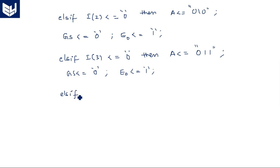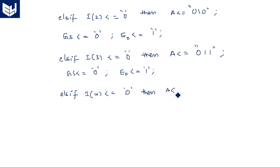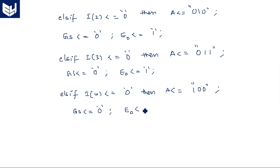Elsif I(4) = '0' — remember, single digits must be kept in single quotation marks, and multiple bits must be kept in double quotation marks — then A is assigned with "100", GS is assigned with '0', and E0 is assigned with '1'.